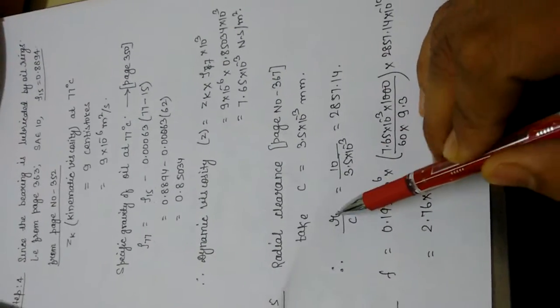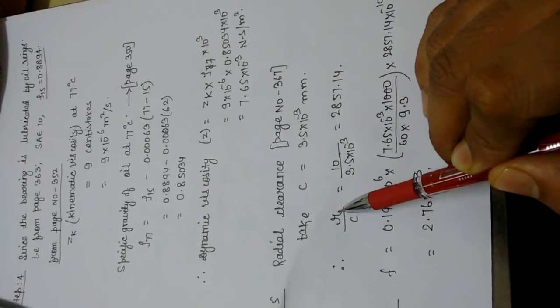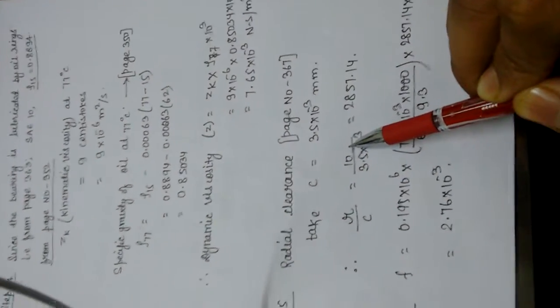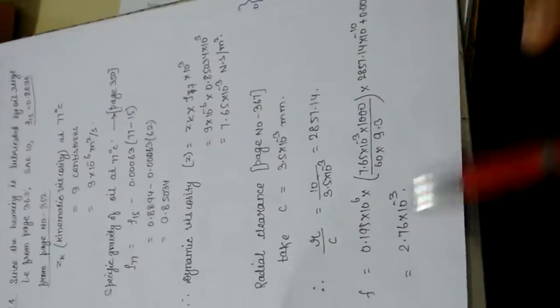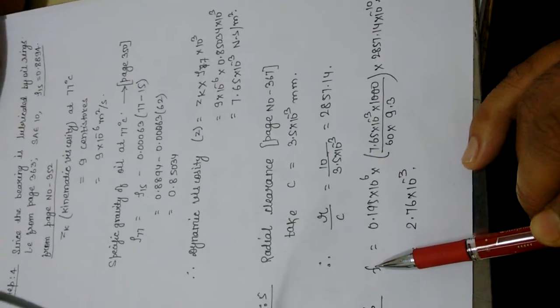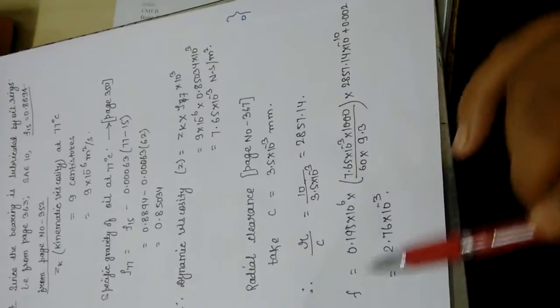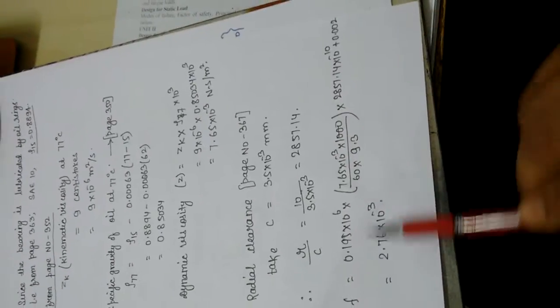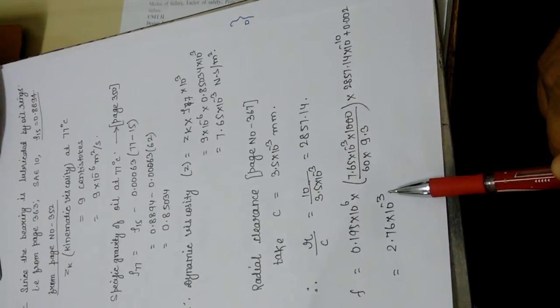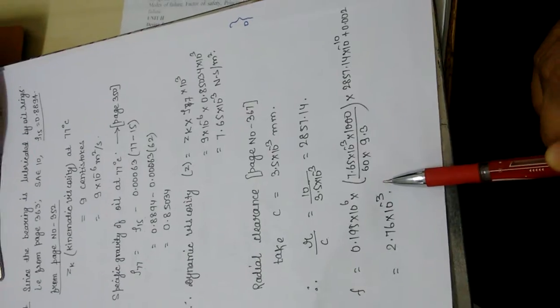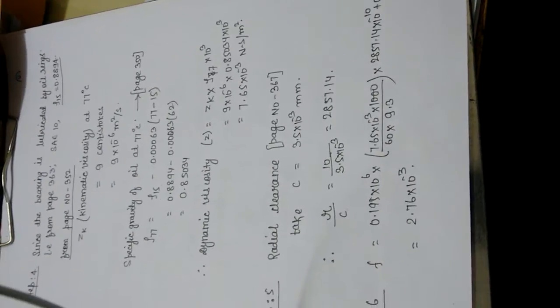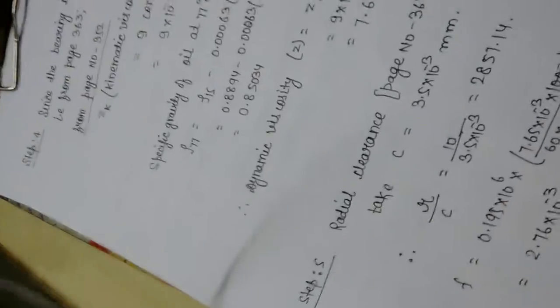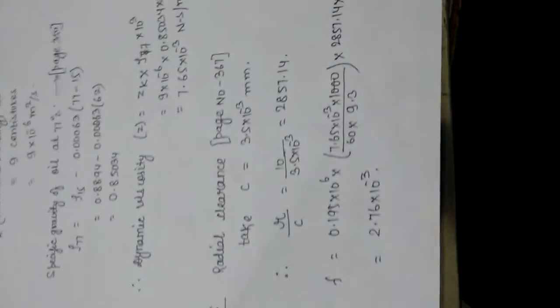Step 6: R/C ratio — R is 10 mm since diameter is 20 mm. F is the coefficient of friction, which we find using McKee's equation. Applying McKee's equation, the coefficient of friction F = 2.76 × 10⁻³.